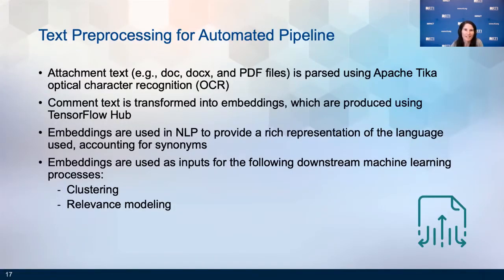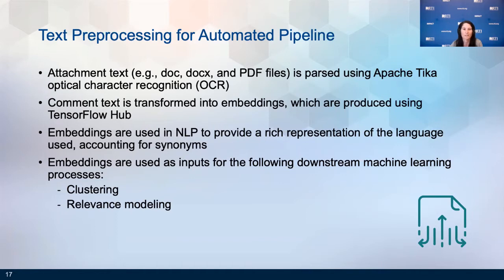The first thing I'd like to discuss in detail is the text preprocessing required to support our machine learning features. All attachment text is parsed using Tika optical character recognition. We then join the text from the posted comment and its corresponding attachment together for complete text, which is supplied to our keyword tagging process. For additional preprocessing, we transform the text into embeddings — a common step in natural language processing. Embeddings provide a rich representation of text, grouping similar words and context together in a numerical format, and can be passed into our downstream machine learning processes.